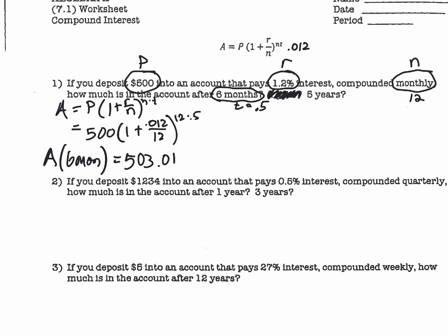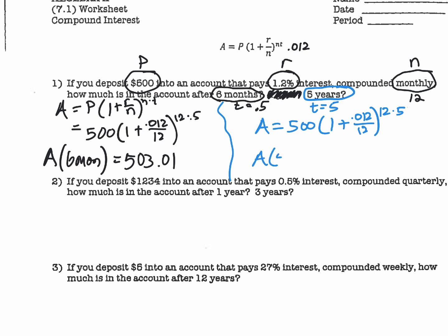Now I want the same scenario but for five years instead. I'll change T from 0.5 to 5. The amount is $500 times one plus 0.012 divided by 12, to the 12 times 5 power. On the calculator: 500, parentheses, 1 plus 0.012 divided by 12, close parentheses, caret key, then 12 times 5 power. The amount after five years is $530.90.